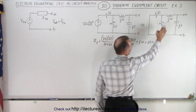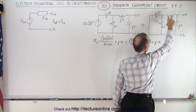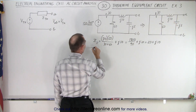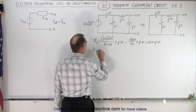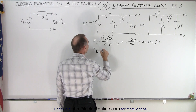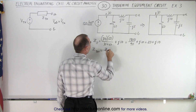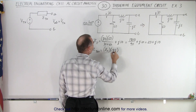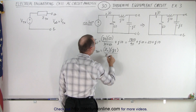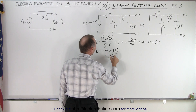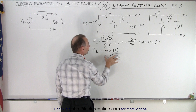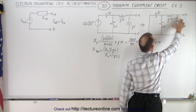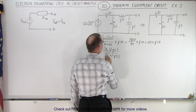That gives us the impedance of those three elements, which are now in parallel with the capacitor. To find the total impedance Z_total, that equals the product of Z_parallel times minus j5, divided by Z_parallel plus minus j5 — so again, product over the sum for the parallel combination with the capacitor.